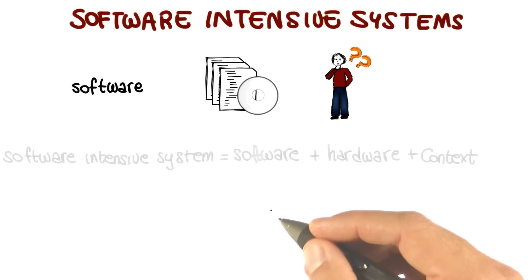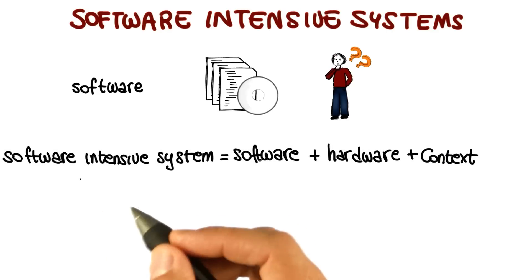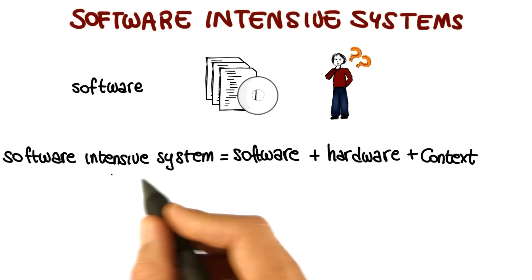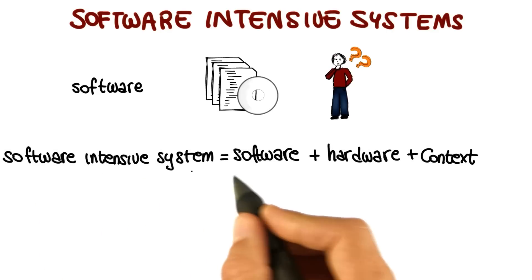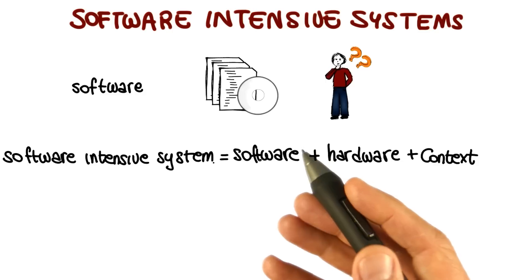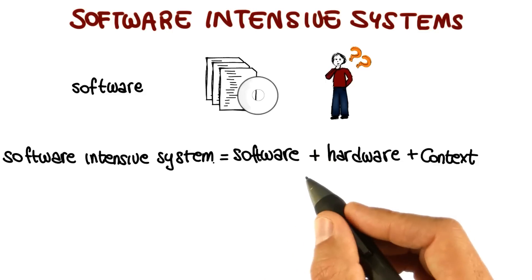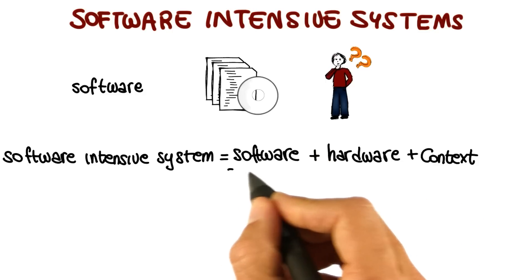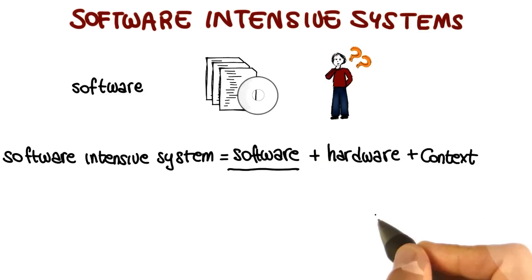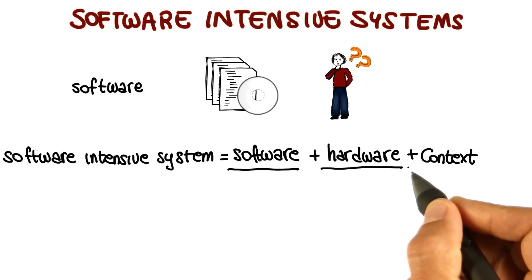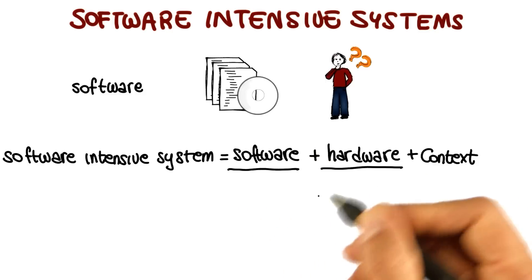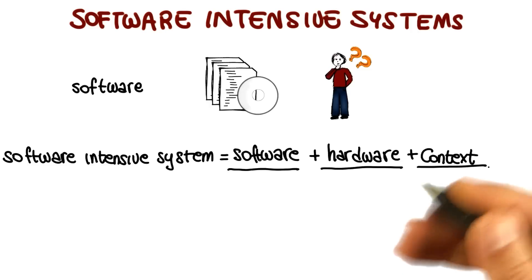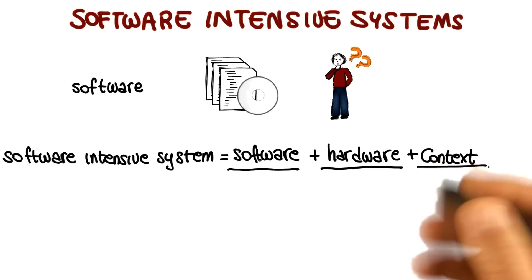So what does that mean exactly? What that means is that when we say software, what we really mean is software intensive system. That is the combination of three things: the software, the hardware on which the software runs, and the context in which the software is used.